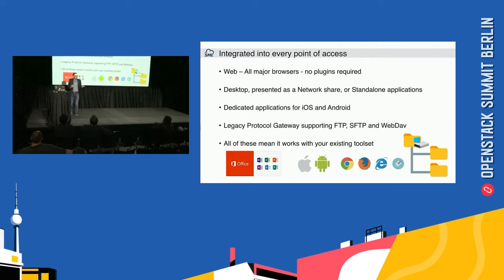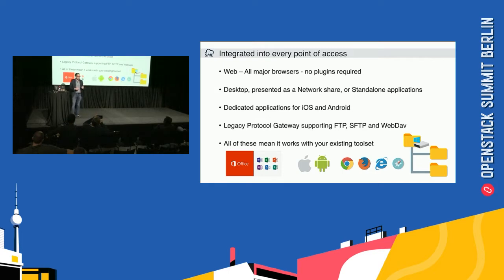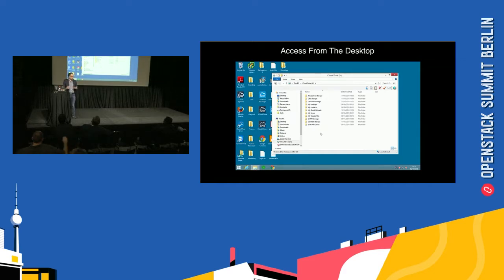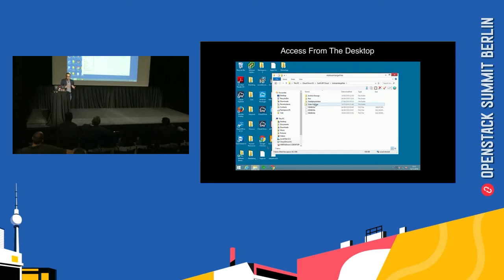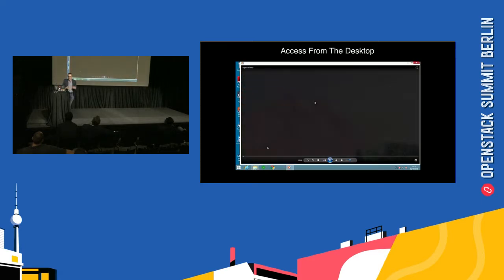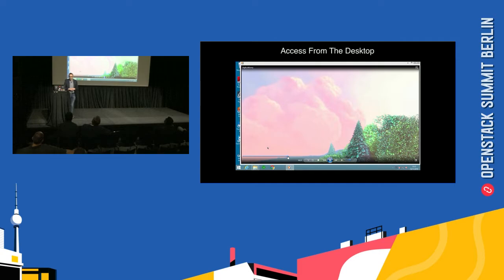The File Fabric is great for these use cases because it's integrated into every point of access — web with no plugins required and a simple web file manager, desktops where it integrates directly into Windows file shares so you can see it as a network share on your PC, dedicated iOS and Android applications, and legacy protocol gateways supporting FTP, SFTP, and WebDAV. So if you have a microscope in your genomics lab that talks FTP, this all integrates into your tool set. Here we can see a Windows desktop connected to a range of different storage platforms — Swift object storage that we can drill into as files and folders, open folders, double-click files, and instantly view videos from the object storage. It's very end user friendly.